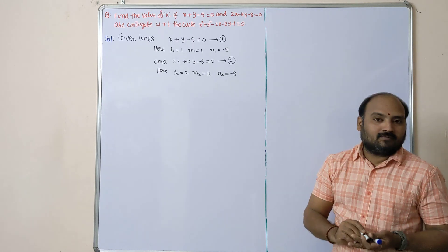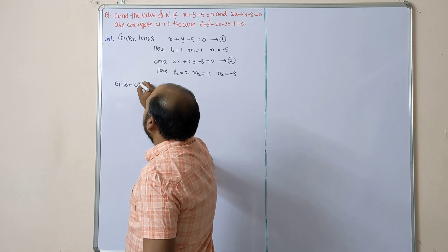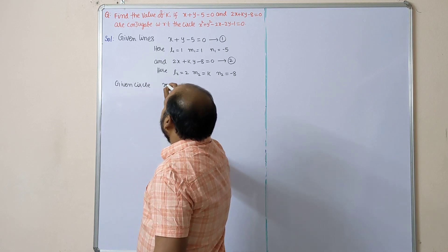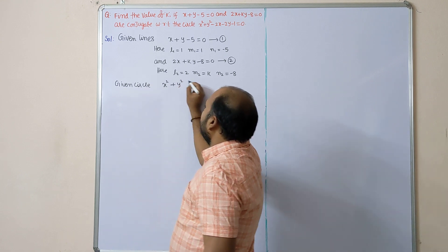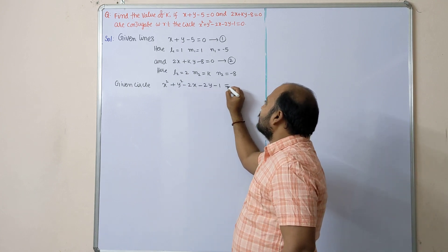Next, given circle: x² + y² - 2x - 2y - 1 = 0.